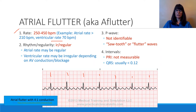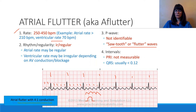These P waves have the classical sawtooth, or flutter wave, appearance — as you can see, they're kind of jagged; they're not really round as the normal P wave usually appears. If I count these P waves, I get quite a large amount: 1, 2, 3, 4, 5, 6, 7, 8, 9, 10, 11, 12, 13, 14, 15.